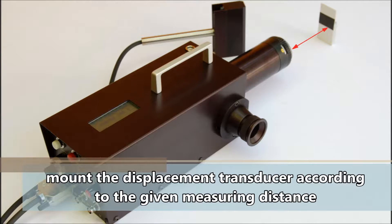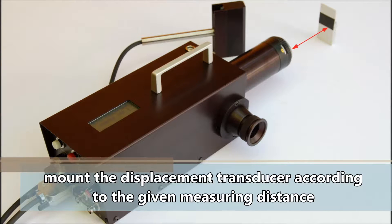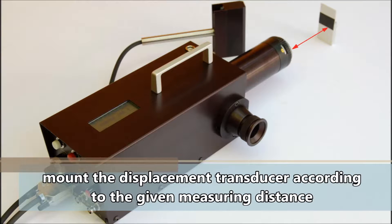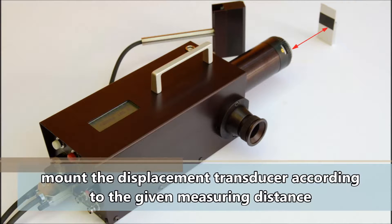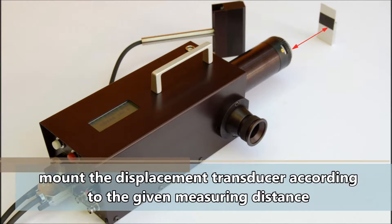The displacement transducer is mounted in front of the object of measurement, which is supplied with a black and white edge. Make sure to comply with a given measuring distance.